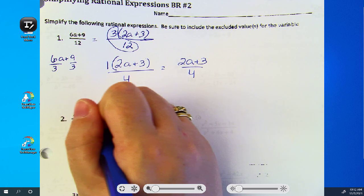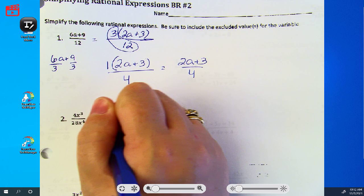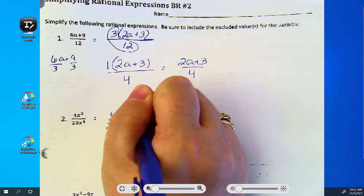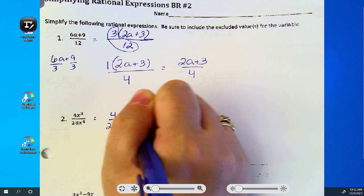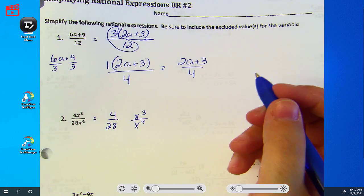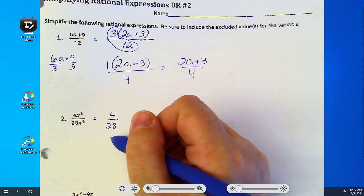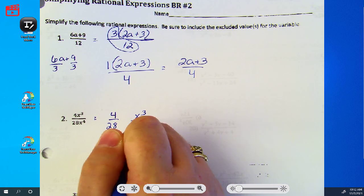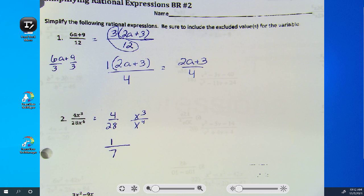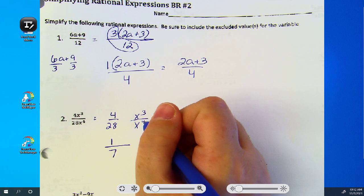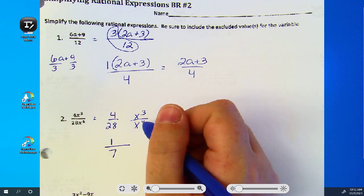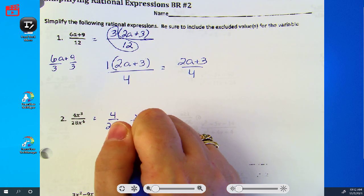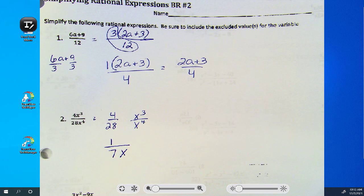Number two, I taught you to split it up. Four over twenty-eight in your calculator gives you one seventh. Three minus four gives you negative one. Negative exponent, so it goes to the bottom.